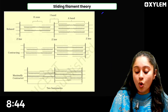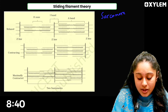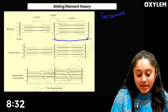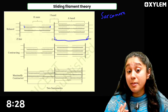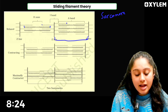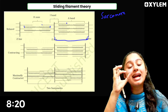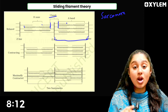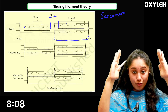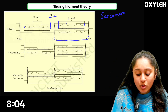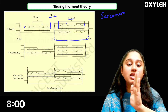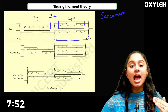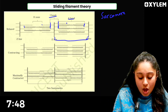When we look at the sarcomere structure, there is a Z line on each side — this is a sarcomere. There is a thick filament, which is the myosin filament, and a thin filament, which is the actin filament. Actin will form the I band and myosin will form the A band. This is a sliding process, and as you can see, overlapping is happening between the filaments.